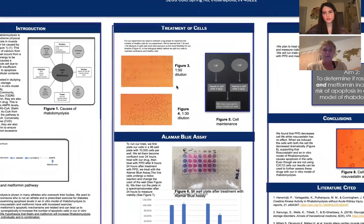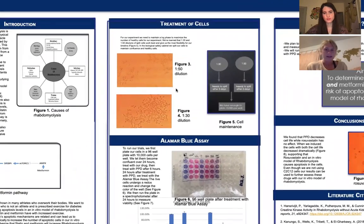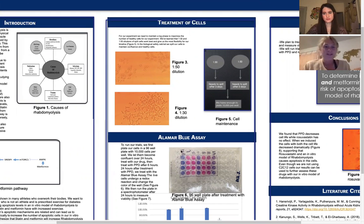And really our first step is to split and first maintain and then split these cells, these 293 cells that we have. So the main goal is to maintain a log phase to maximize the number of healthy cells for our experiment. And two dilutions that we've been using allow us a range of different days that we can choose to plate ourselves on the 96-well plate.